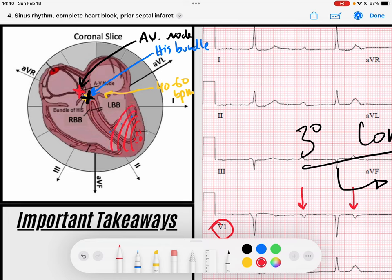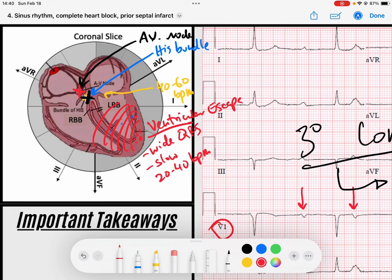So, a ventricular escape rhythm would be a wide complex QRS, and it would be slow. It would be 20 to 40 beats per minute. That would be if I had a ventricular escape. Same concept, but slower.